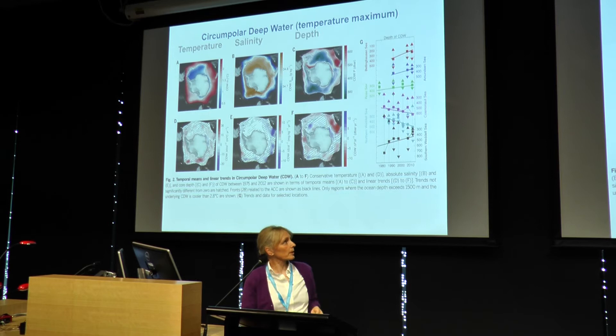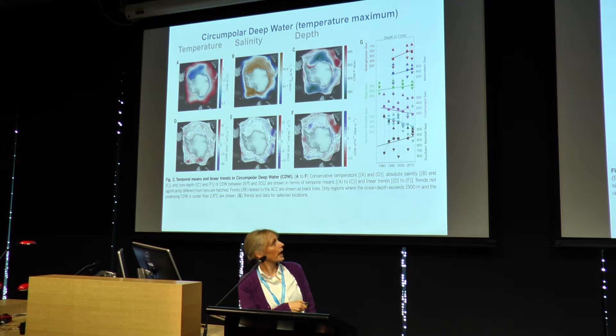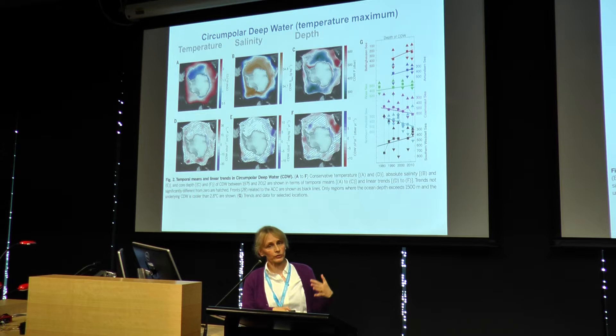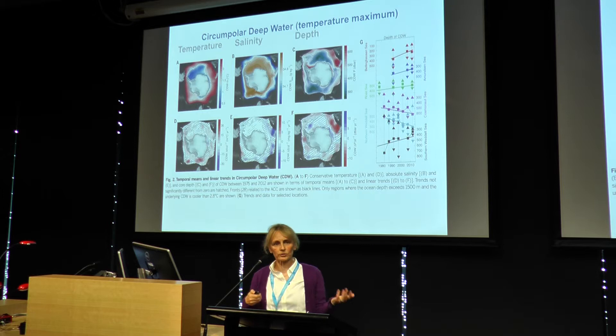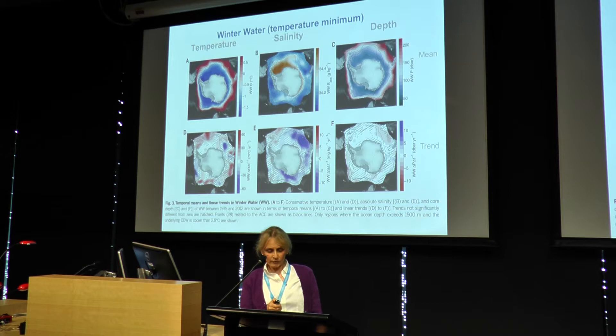You can do the same analysis for the different water masses. This is for the temperature maximum layer, the circumpolar deep water. Here we've got the mean temperature, salinity, and depth of that temperature maximum, and on the bottom the long-term trends in each of those from the whole data set. The figure on the right-hand side shows the trend in the depth of the CDW. In general, there's a warming of the CDW layer, and you can also see a shoaling — it's becoming shallower, particularly around the Amundsen Sea and Bellingshausen regions. We think that trend is probably associated with causing some of those trends in the near-Antarctic water masses.